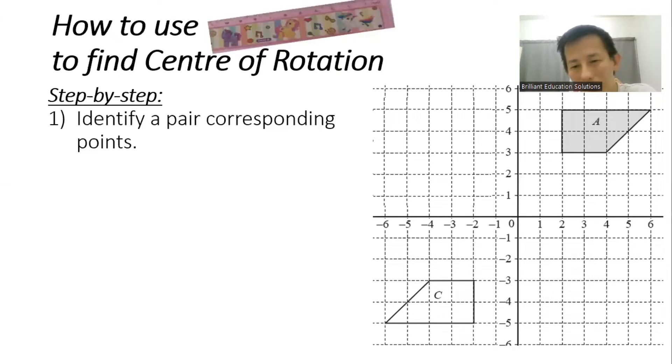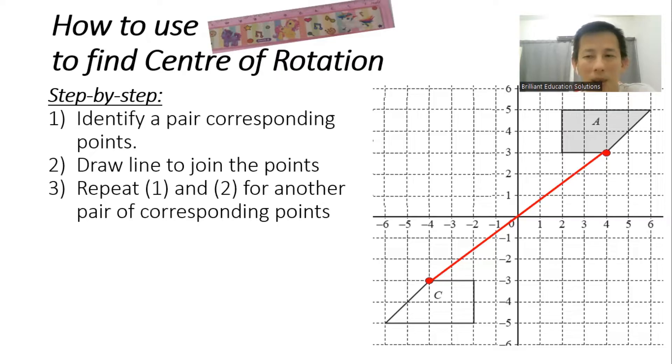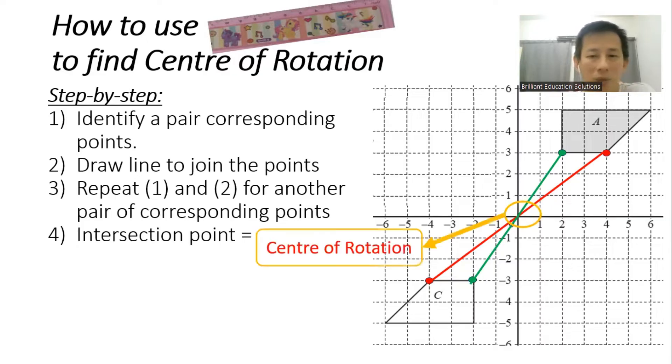First, you find the corresponding point and join it. You repeat the same for another pair and you have the center of rotation. But do bear in mind, this only works for 180 degrees.